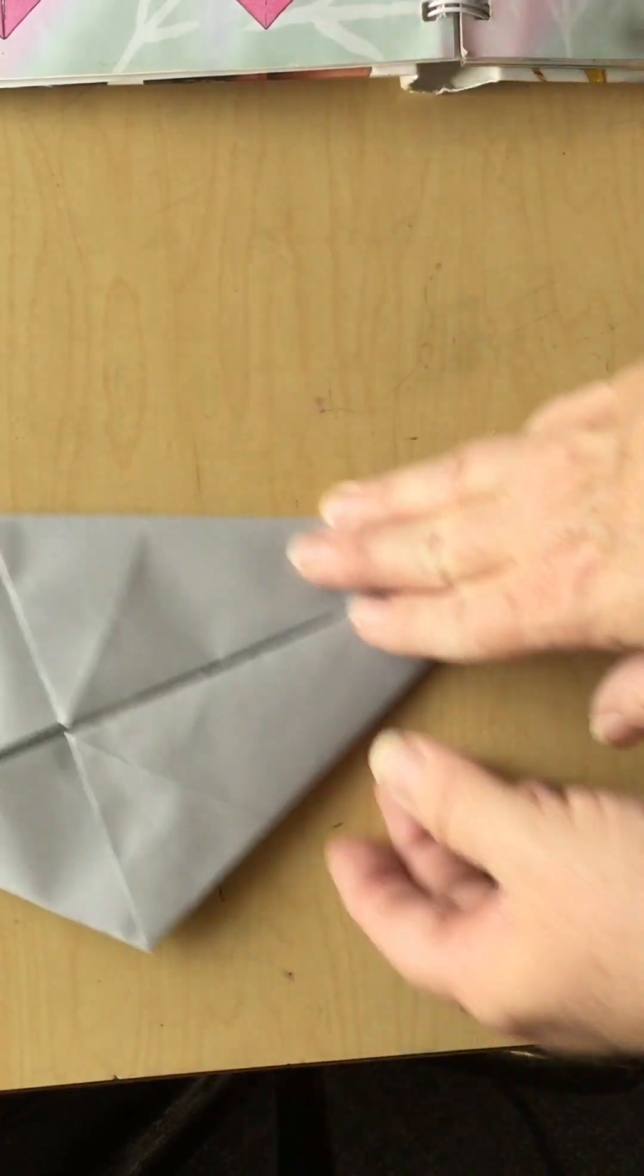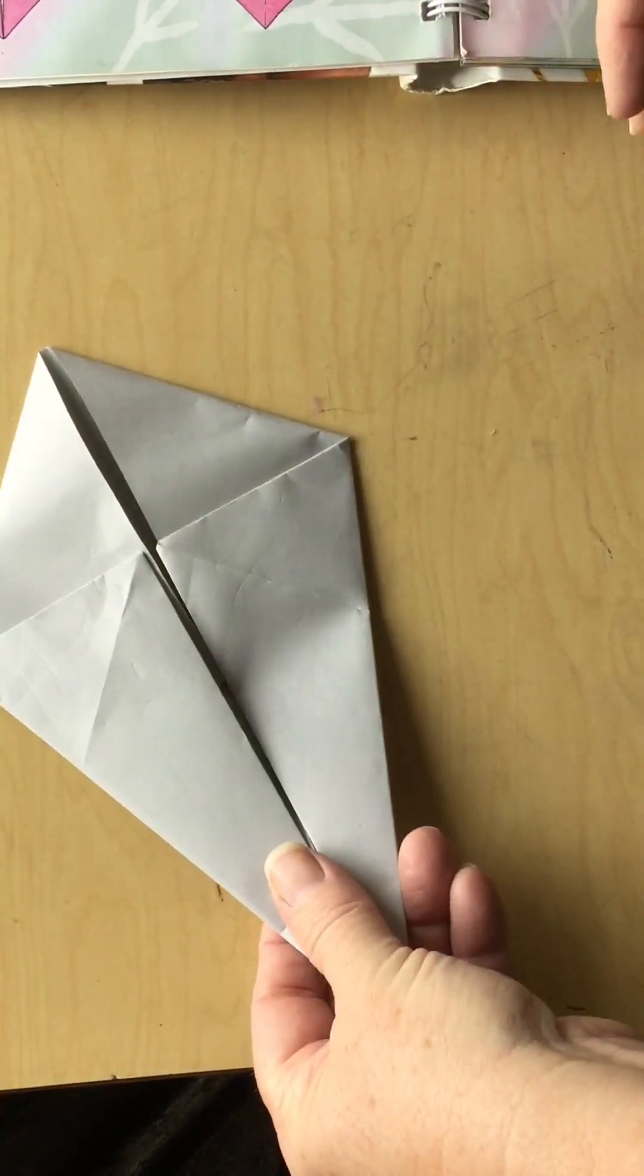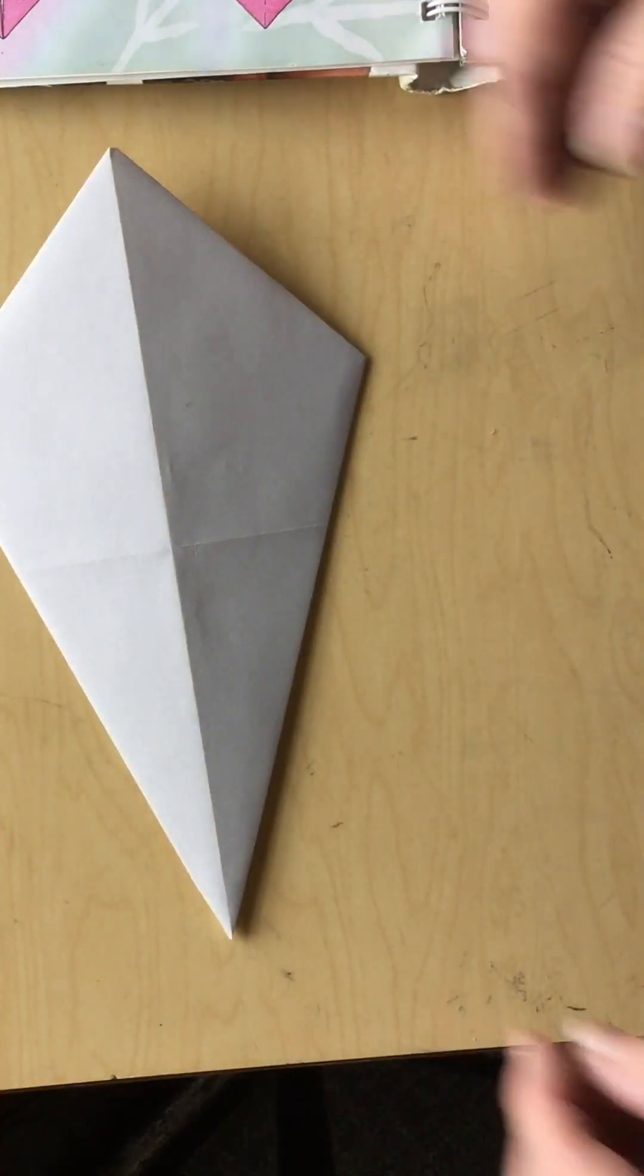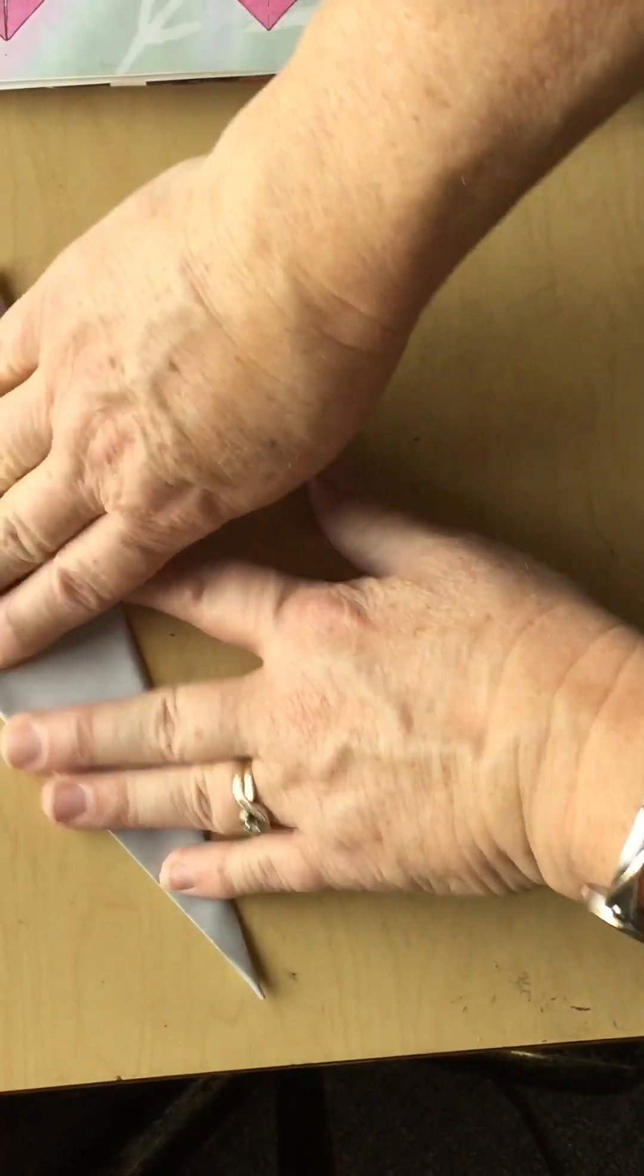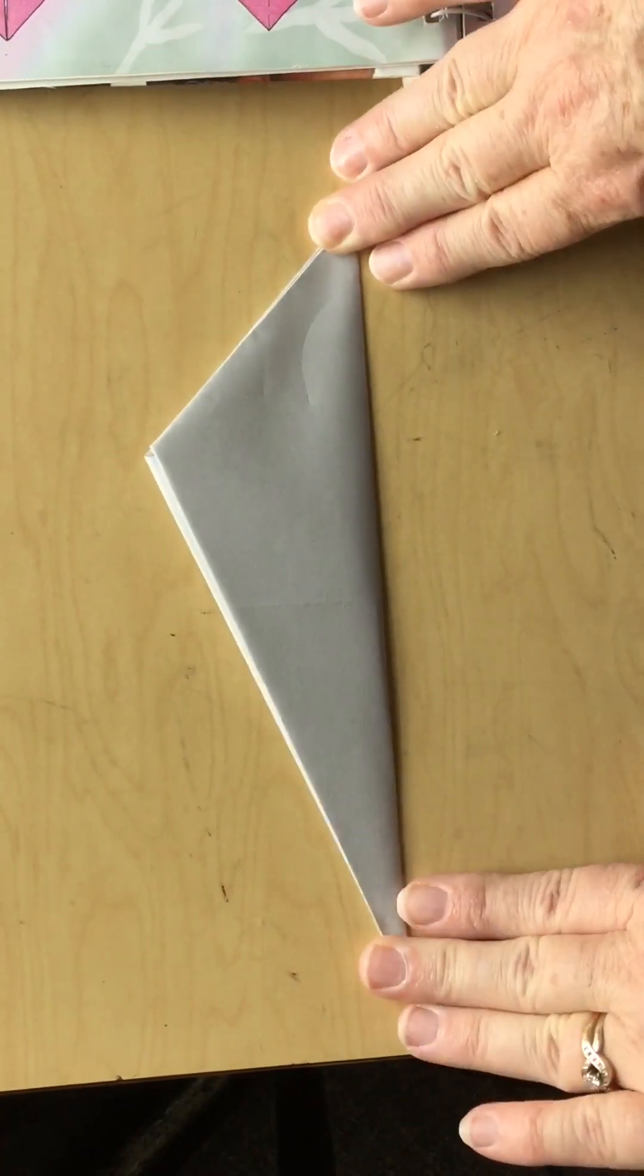Once you have this upside down kite, see that? That side looks like this. Turn it back over and fold these sides together. And then it makes a very strange looking triangle.